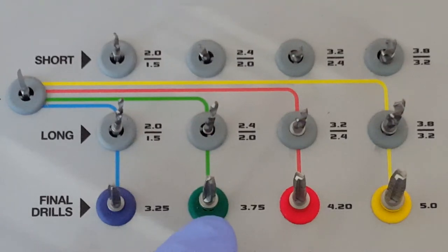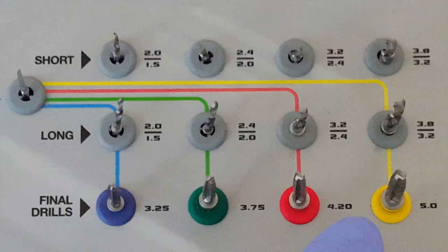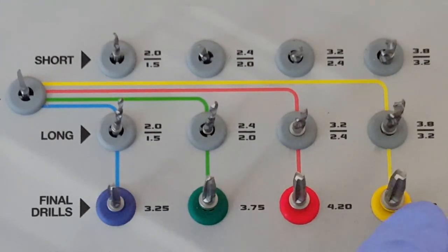The red color signifies the 4.2 millimeter diameter implant, which is also a standard platform implant, and the yellow color corresponds to the 5 millimeter implant, also a standard platform implant.